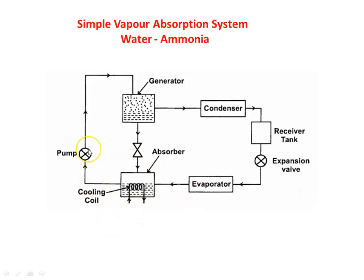Then the solution goes through the pump to the generator. In the generator, we have a heating element which heats the ammonia-water solution. When the solution is heated, ammonia evaporates and ammonia vapor is formed. This vapor goes to the condenser. As the ammonia vapor is removed from the solution, it becomes a weak ammonia solution, which is brought back to the absorber.